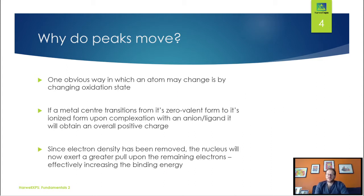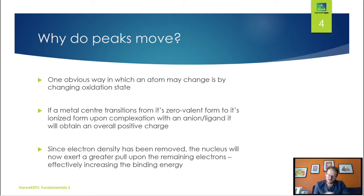The first and most obvious way an atom may change is by changing the oxidation state. Going from a zero-valent metallic form to an ionized form or a complexation where you've got an anion and a ligand system, you're going to get charge changes and a positive charge on your atom. Since you've removed electron density from this system, your nucleus is now going to exert a greater pull on the remaining electrons, and this is going to increase the binding energy.